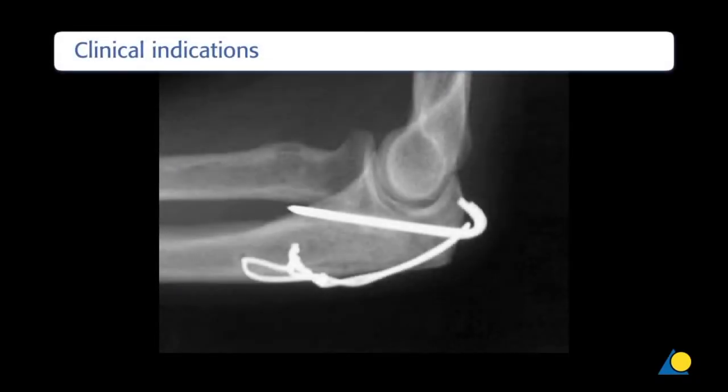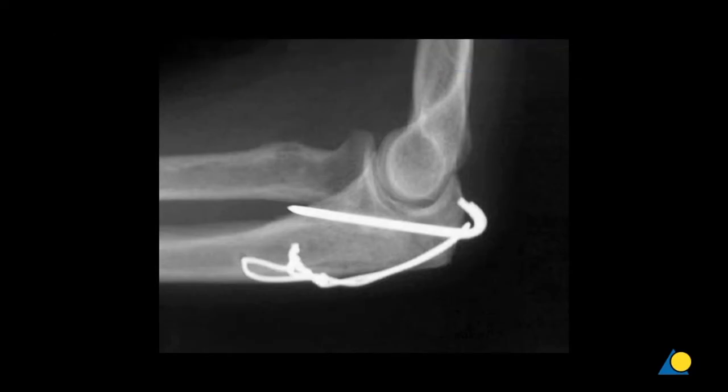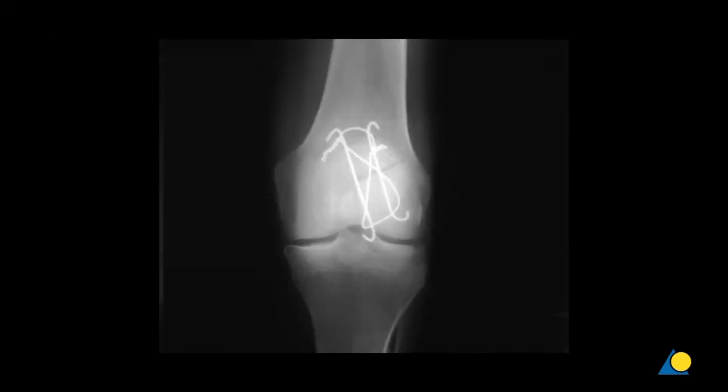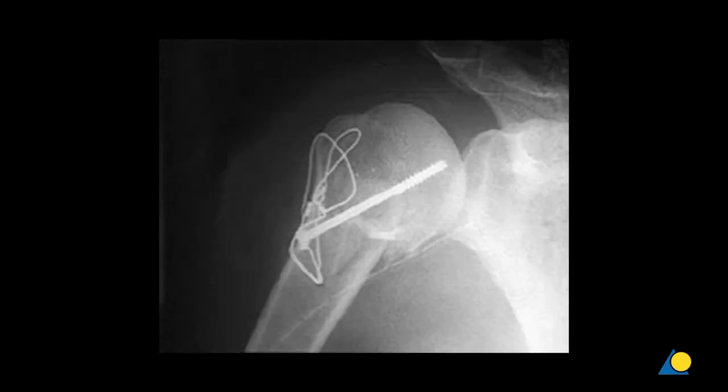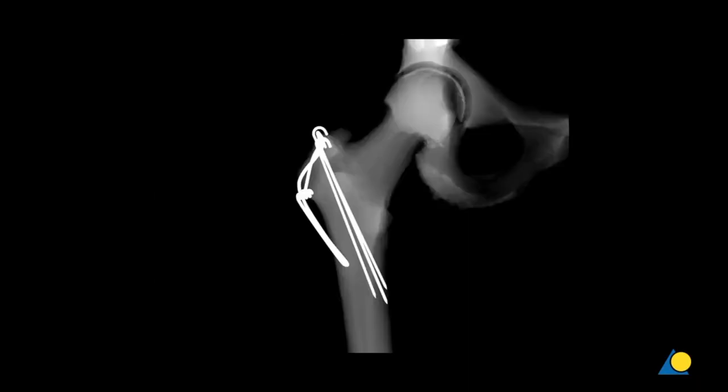Tension band wiring is applied to fractures of the olecranon, the patella, the greater tuberosity of the humerus, and the greater trochanter.